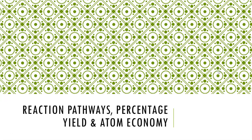Hi everyone. Now that we've looked at reaction pathways and how we can put those chemical reactions together to make more complex molecules, I just wanted to make a quick video for us to talk about percentage yield and atom economy. Essentially these are ways that we can evaluate these pathways to see which would be the most efficient for the purpose that we're after.